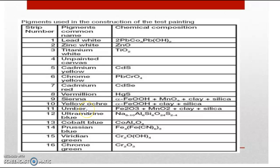Yellow ochre and umber — umber is also a natural pigment, darker than ochre, and has a dark yellowish-brown color. On heating, it gives a dark brown color, known as burnt umber. Other pigments include ultramarine blue, cobalt blue, Prussian blue, viridian green, and chrome green. These are the different pigments and their chemical compositions.